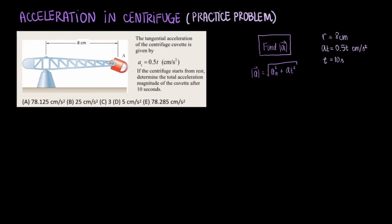We can easily get the tangential component at 10 seconds. All we need to do is multiply 0.5 times 10 and we get 5 centimeters per second squared. But what is the normal component of the acceleration?